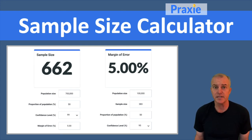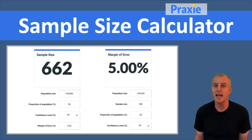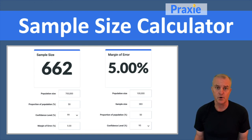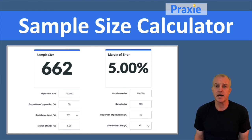What you want to do is sample some element, or some sample size, of that population to give you a representative view that you can rely upon. You want to take some percentage of that population and sample it to give you the ability to extrapolate your results to the broader population.